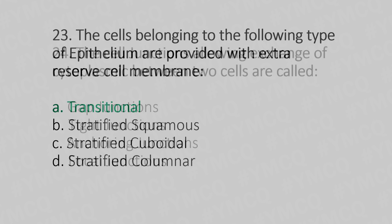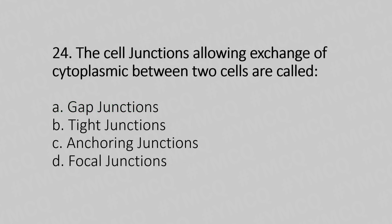Now let's move to question number 24. The cell junctions allowing the exchange of cytoplasm between two cells are called: Option A: gap junctions. Option B: tight junctions. Option C: anchoring junctions. Option D: focal junctions. And the answer is Option A — gap junctions.